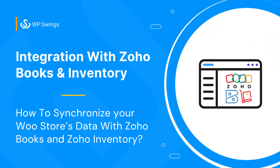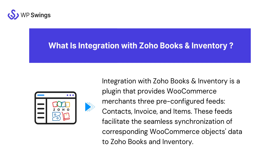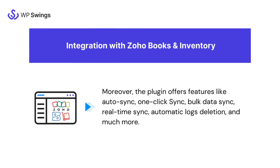Today's demo video is on the Integration with Zoho Books and Inventory plugin. This plugin provides WooCommerce merchants three pre-configured feeds — contacts, invoice, and items. These feeds facilitate seamless synchronization of corresponding WooCommerce objects data to Zoho Books and Inventory. The plugin also offers features like auto sync, one-click sync, bulk data sync, real-time sync, automatic log deletion, and much more.